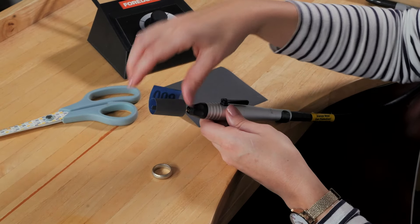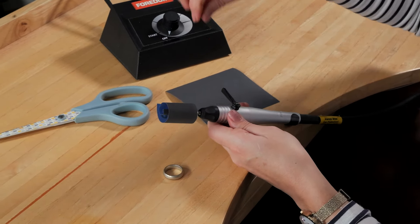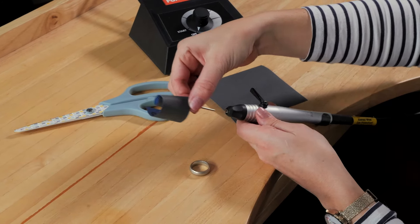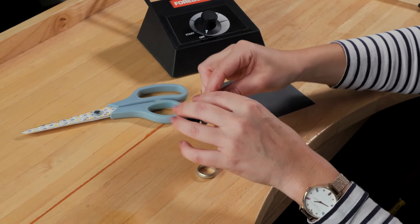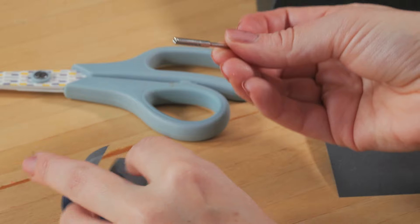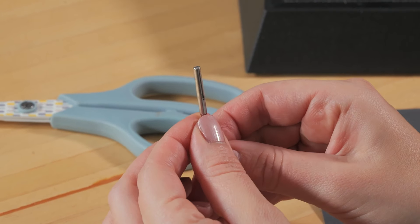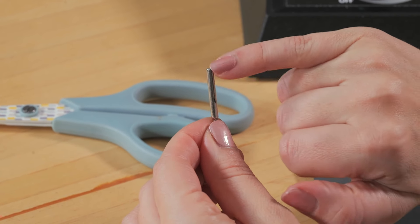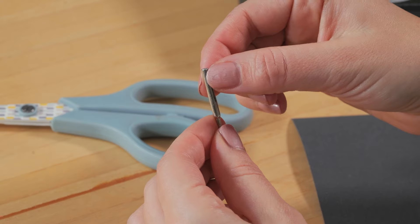So first of all I want to show you what the split pin mandrel is. I'm just going to lift it up and take it out. I'm going to take out the sandpaper. So it's called a mandrel and it's got a split in the middle, hence the name split pin mandrel.